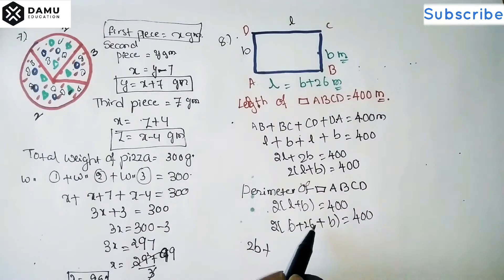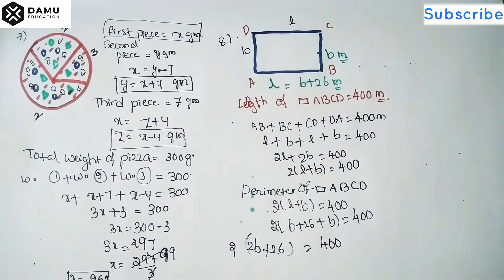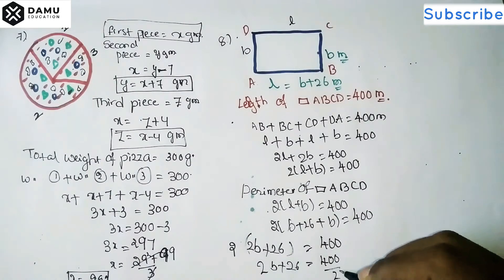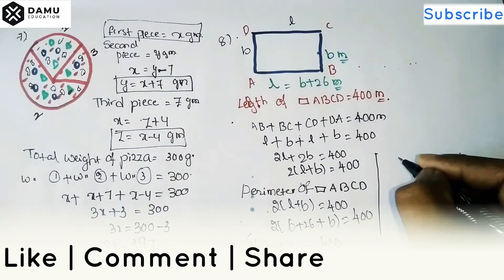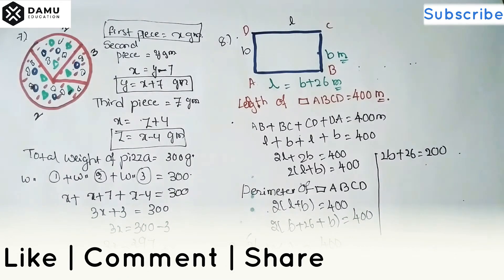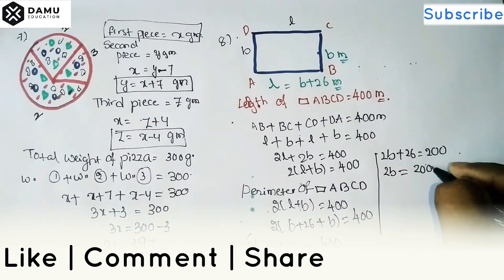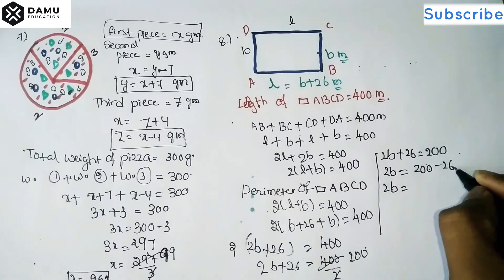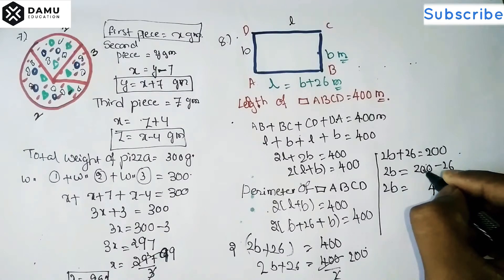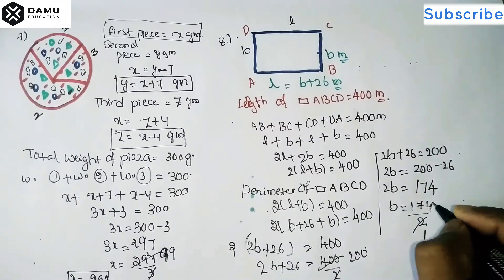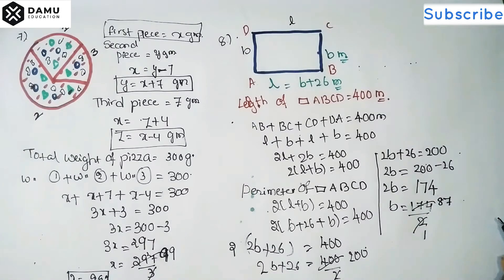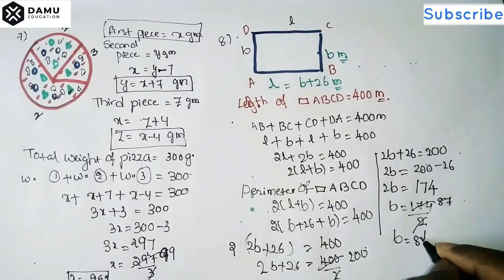That gives 2b plus 2b — wait, b plus b is 2b — and 26 into 2 is 52, so 2b plus 52 equals 400. Dividing both sides by 2: 2b plus 26 equals 200. Then 2b equals 200 minus 26, which is 174. So b equals 174 divided by 2, and b equals 87 meters.